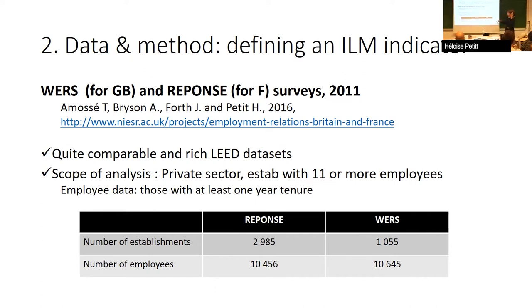The scope of analysis is the private sector and establishments with 11 or more employees — the smaller of the two scopes. Another restriction from the French data is that the employee questionnaire is only given to workers with at least one year of tenure, so we don't have very short-tenure workers. In the end, we have nearly 3,000 establishments for France and 1,000 for WERS. The number of employees is more than 10,000 in both countries, and for those 10,000 workers we have information from their employer — allowing us to connect the two.